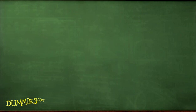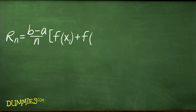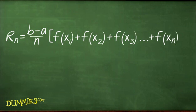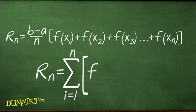You can use sigma notation to write out the right rectangle sum for the area under a curve. This is the formula for a right sum, which is used to estimate the area under a curve. Here's the same formula written with sigma notation.